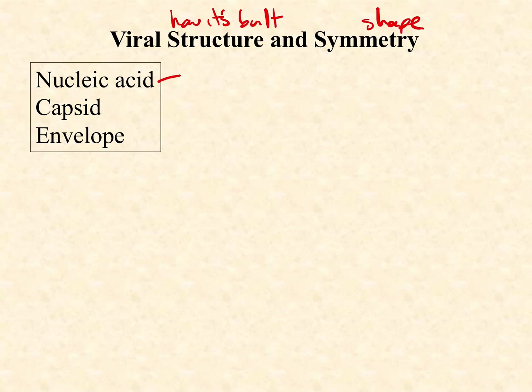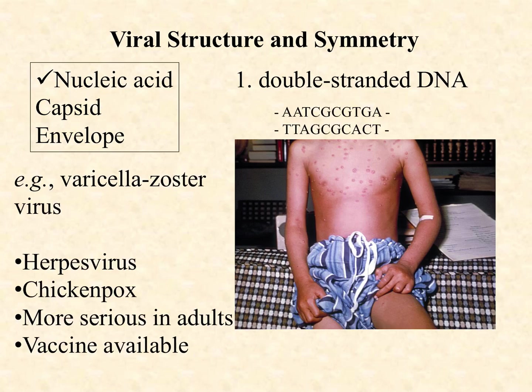The first part of the structure is the nucleic acid. In subsequent videos we'll talk about capsid, envelope, and symmetry. A great example of a run-of-the-mill double-stranded DNA virus would be the chicken pox virus — the fancy name for it is varicella zoster virus, or VZV. It belongs to a very large family of viruses called herpesviruses, which are all very similar to one another.